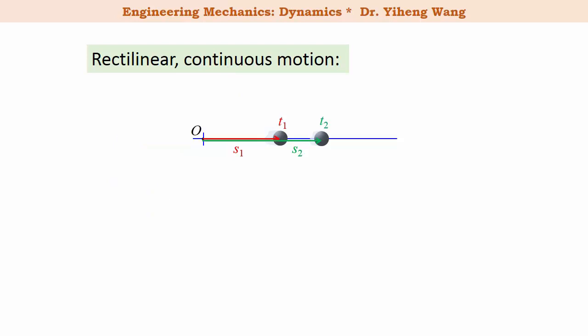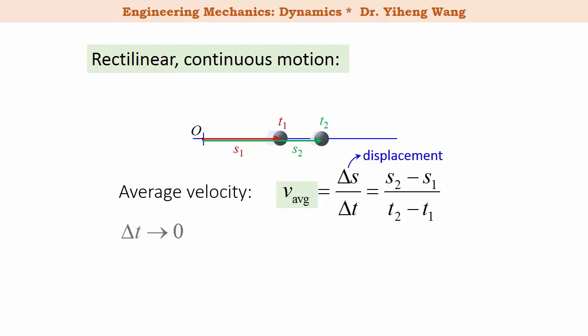From time t1 to time t2, the average velocity is defined as the change in position over the change in time, delta s, or the displacement over delta t. When the time difference delta t approaches zero, the average velocity becomes the instantaneous velocity, defined as ds over dt, or the time derivative of position.